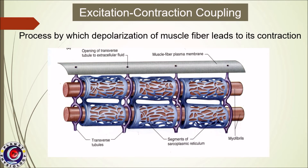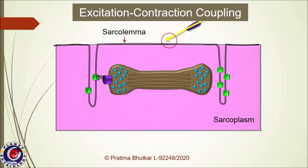Excitation-contraction coupling is the process by which depolarization of the muscle leads to its contraction, and the sarco-tubular system plays an important role in this process. Let us understand this process with the help of a simple diagram and animation. Note that this diagram as well as animation has a copyright claim, and hence do not reproduce it without permission — whenever you are reproducing it, cite the copyright information.